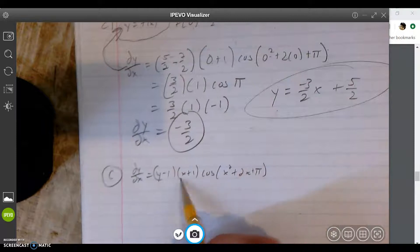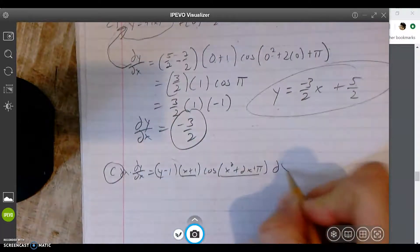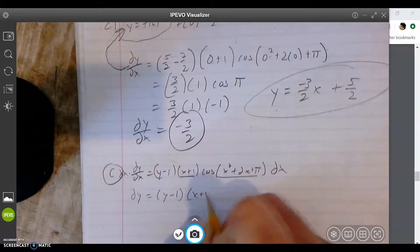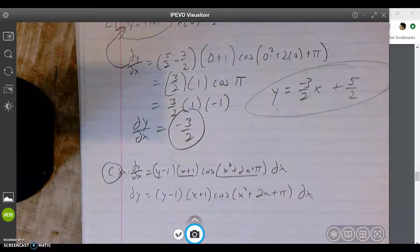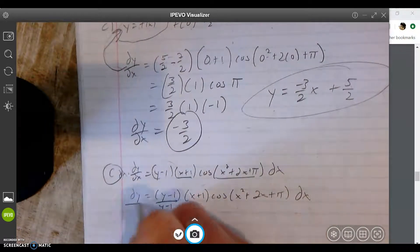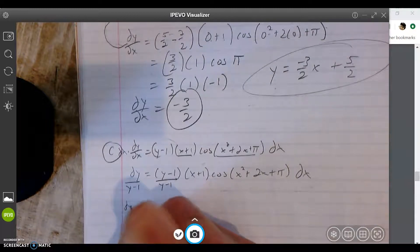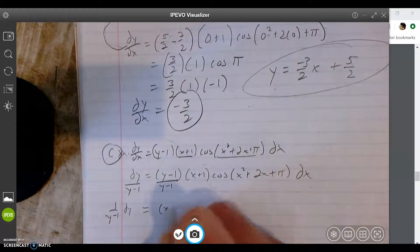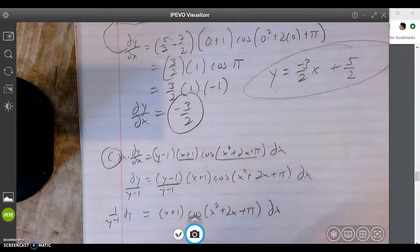It looks intimidating at first, but you just follow the same rules we've been doing. I want x's and y's. So these are the x's right here, and this is the y here. First thing I'm going to do is multiply by dx on both sides. Get the x over there. So I got dy = (y-1)(x+1)cos(x²+2x+π)dx. Now I got my x's - all this stuff is the x's. So this y has got to go. I'm going to divide by (y-1).